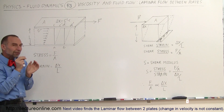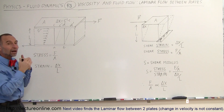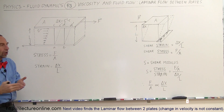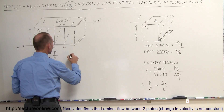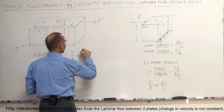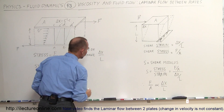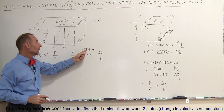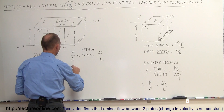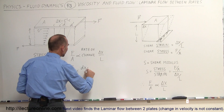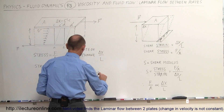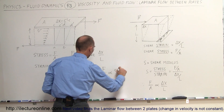So instead, since we know that pulling with the right force produces a constant velocity, we use the rate of deformation rather than the deformation itself. Instead of delta x divided by L, we use the rate of change of delta x divided by L. Since L is constant, that becomes the rate of change of x over time — which is velocity. Therefore, F divided by A is proportional to dx/dt divided by L, and since dx/dt equals velocity, F divided by A is proportional to V over L.